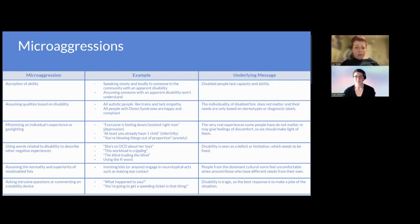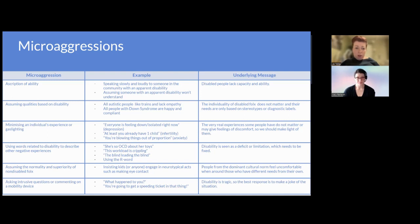There are many different types of microaggressions related to ableism, as you can see in the table. You'll find a copy of the table on your reflection sheet. Pause the video now, view the table, and reflect.